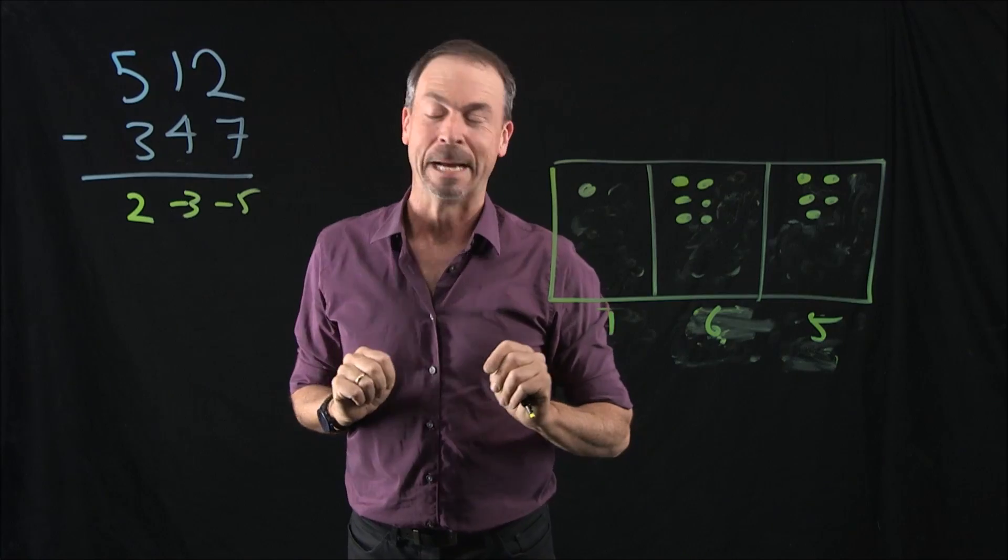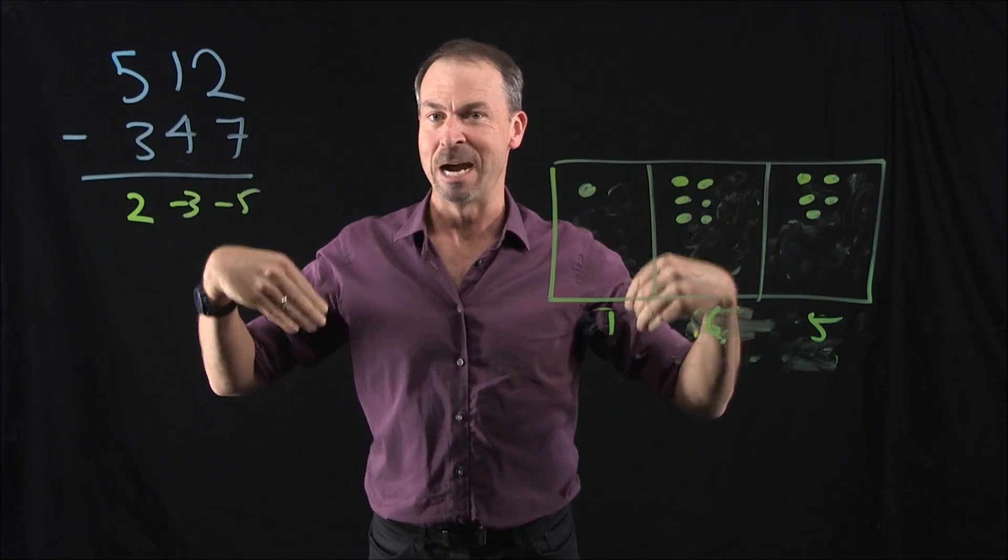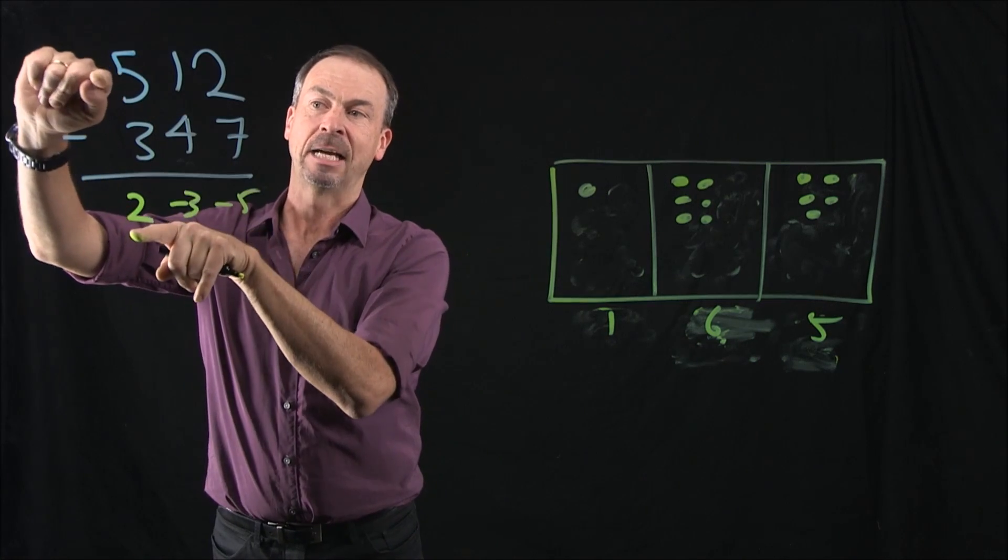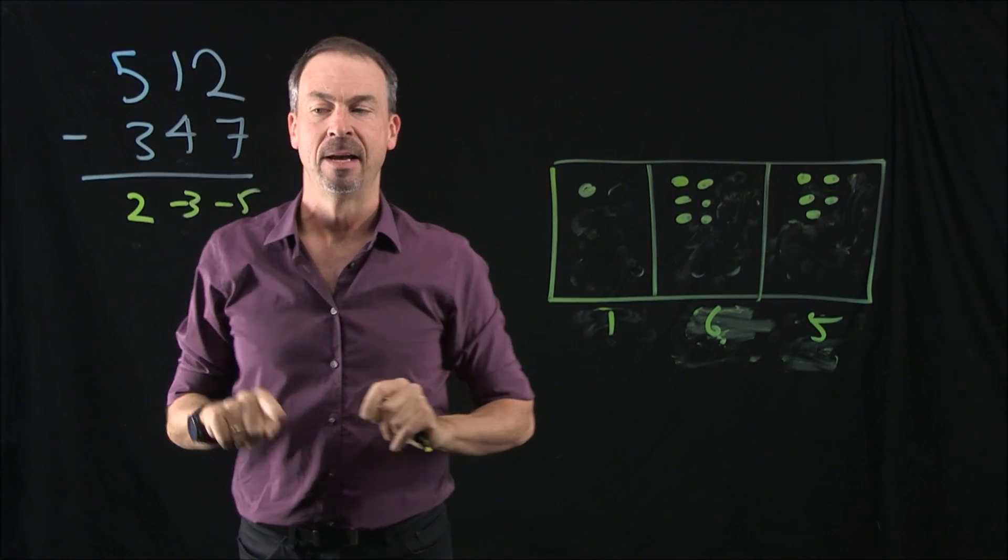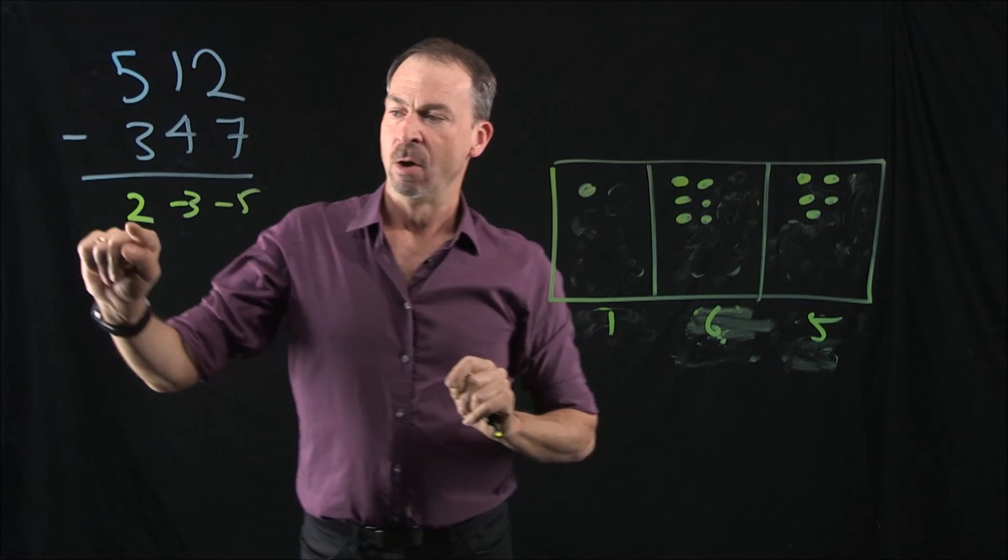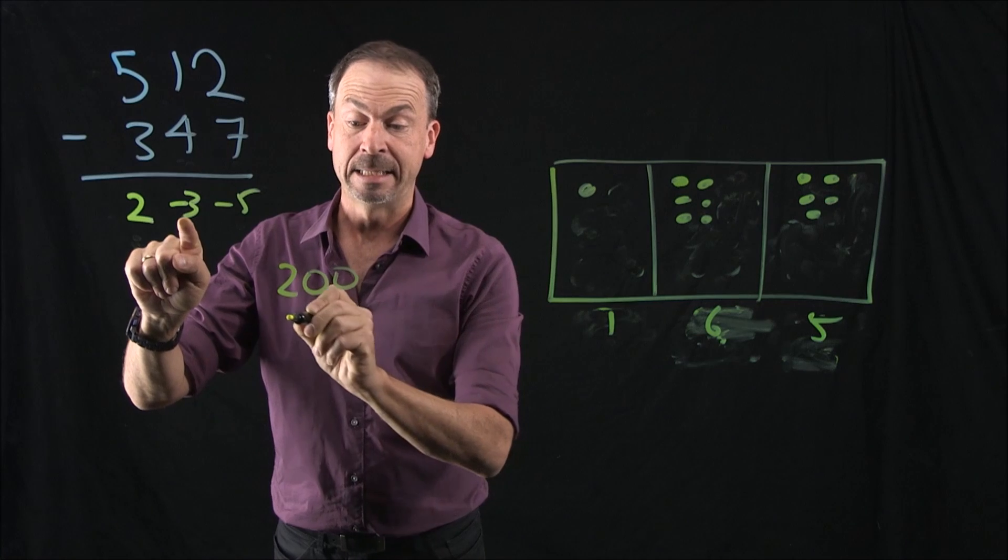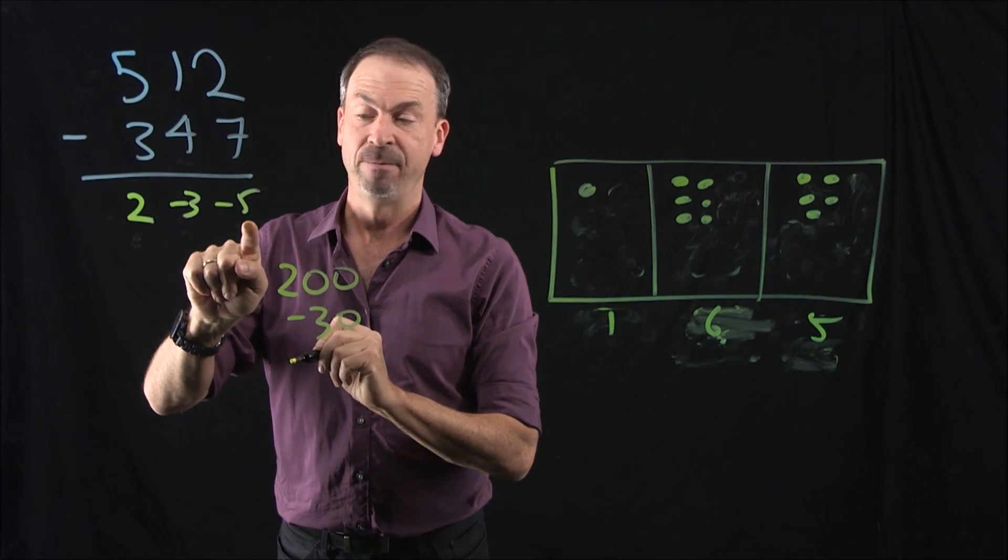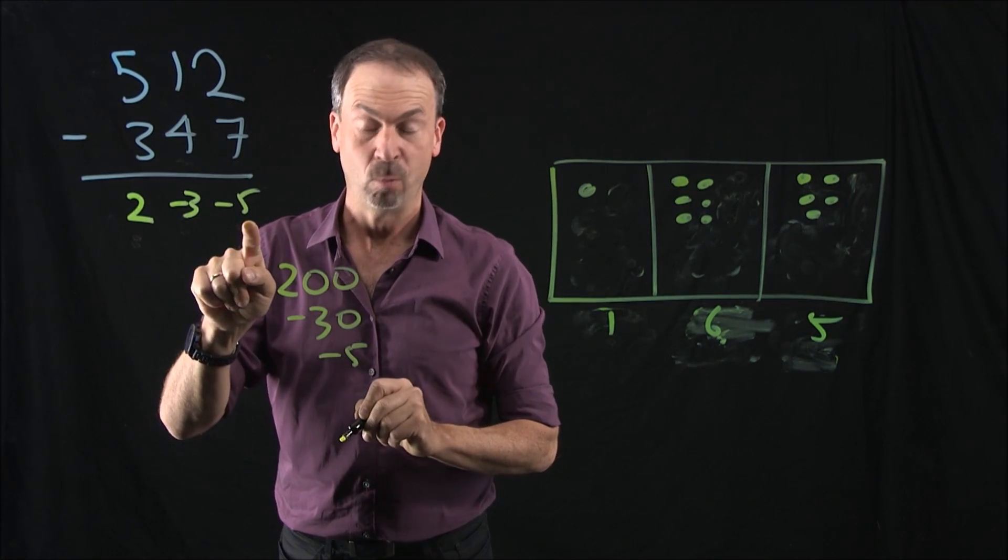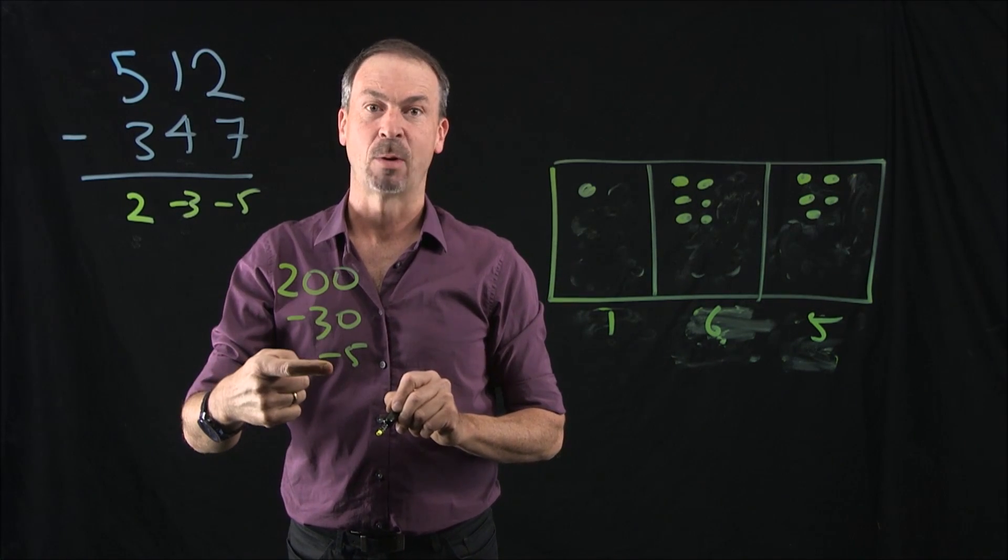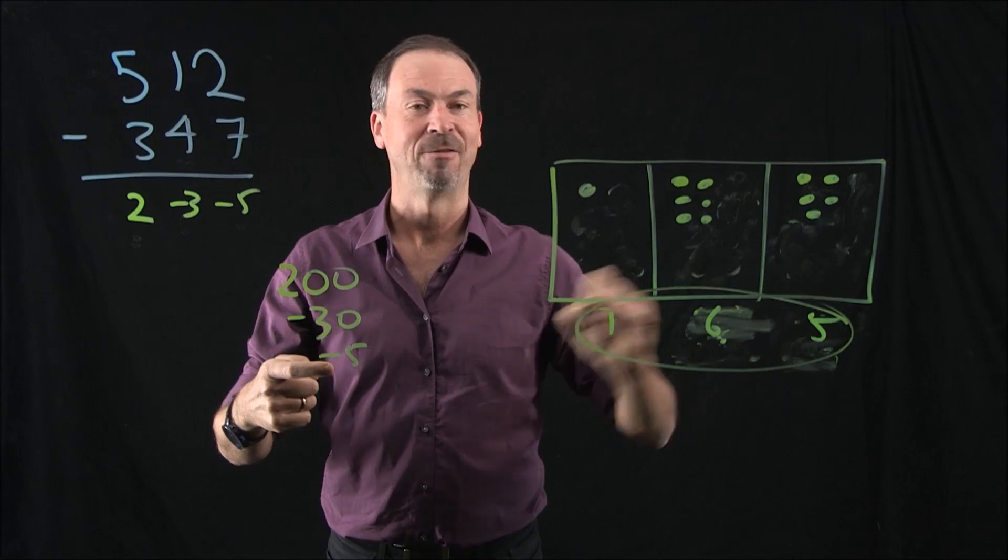But let me point out one thing. Maybe as a compromise between my approach and the standard approaches, go back and do what I did. Left to right. Get 200 negative 3t negative 5. And think about what's there. Right now, I've got that 2 is really 200. That negative 3 is really three anti-tens, negative 30. That negative 5 is really actually negative 5 ones. And look, 200 take away 30, 170. Take away 5, 165.